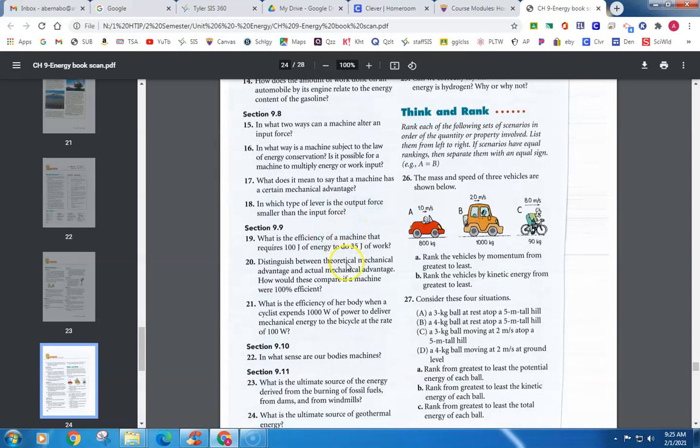19: What is the efficiency of a machine that requires 100 joules of energy to do 35 joules of work? That is, the output work over the input work, so 35 over 100 times 100% gives you 35%.